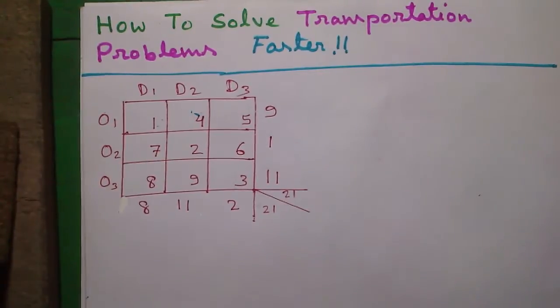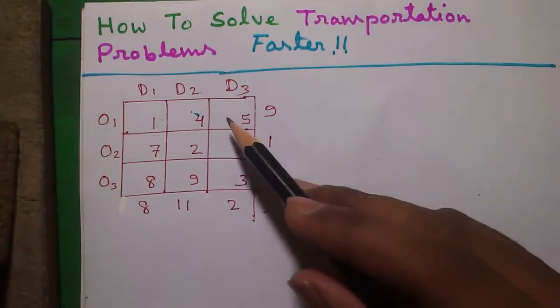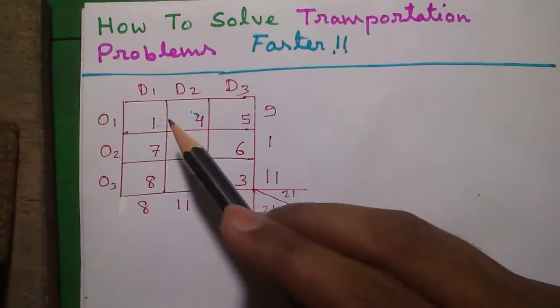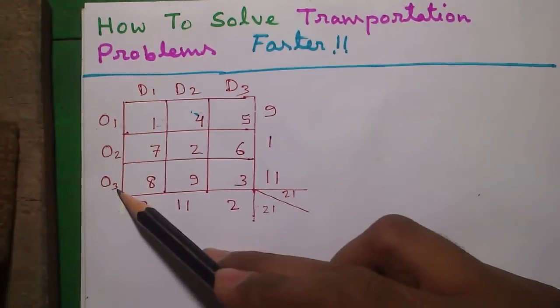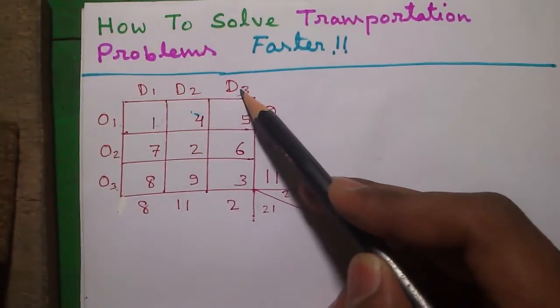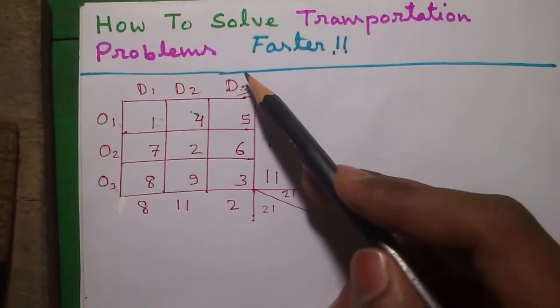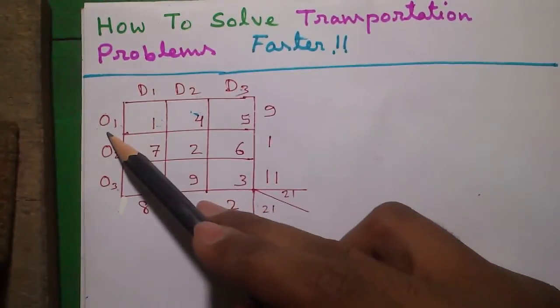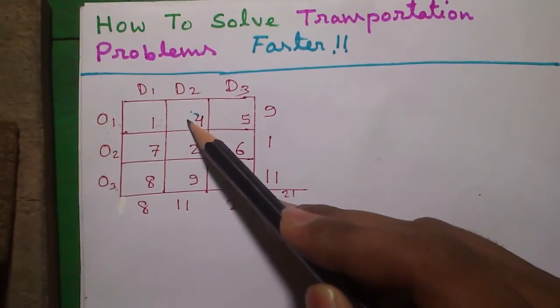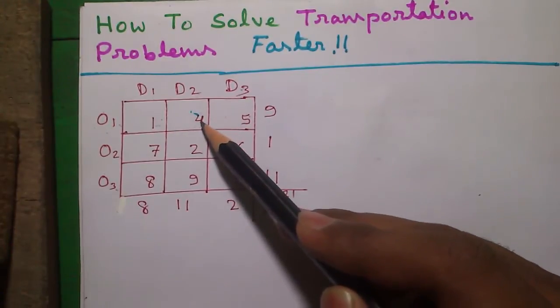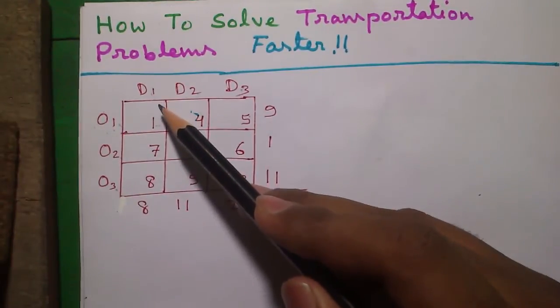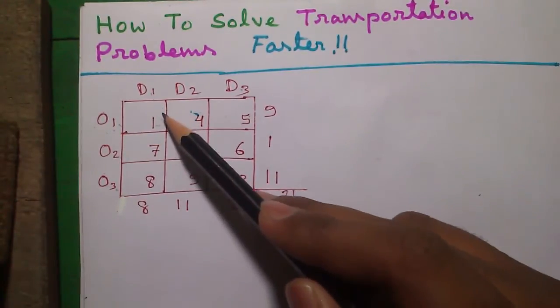First some basics. This is called a cost matrix and these individual cell values are called the transportation cost. We have three origins O1, O2, O3 and three destinations D1, D2 and D3. So if we transport 1 unit of goods from origin 1 to destination D2, our cost of transportation is 4. But if we transport 1 unit of goods from origin 1 to destination 1, our cost of transportation reduces to 1.